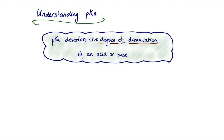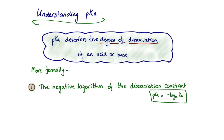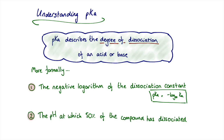In general terms, pKa describes the degree of dissociation of an acid or base — it applies to both, which is an important point. More formally, there are two main definitions. The first is that pKa is the negative logarithm to base 10 of the dissociation constant Ka, analogous to pH being the negative log of [H⁺]. The second definition is that pKa is the pH at which 50% of the compound has dissociated.